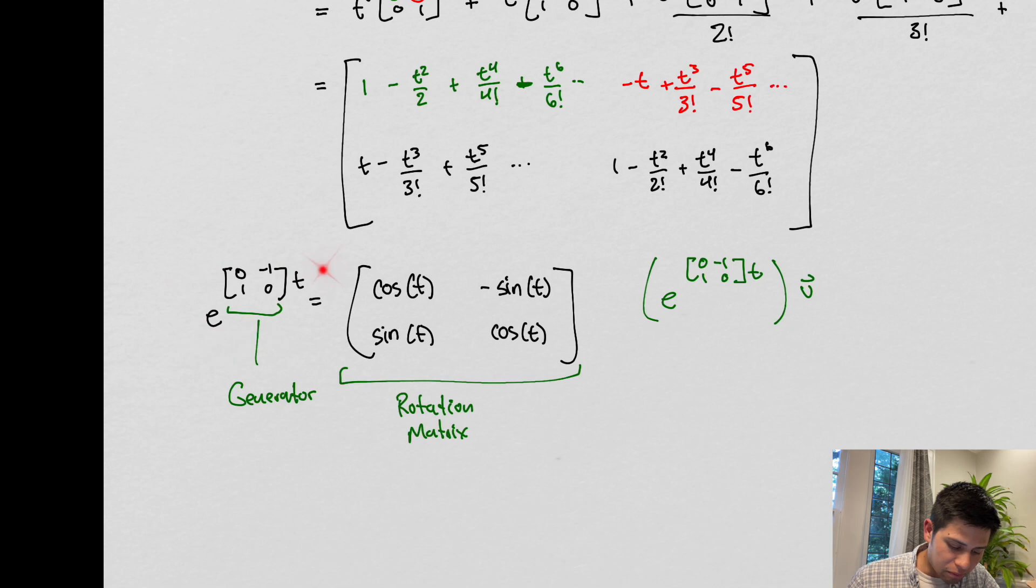Right, so Lie groups involve themselves in continuous rotations. You can take a rotation of some vector, and the generator of those rotations is this matrix here. Okay, whenever we apply this operator to some vector, just like I'm doing here, this is sort of a continuous way of operating on this vector. You put in a value of t and you can operate on some vector in this way.